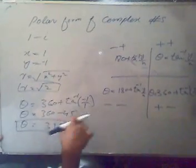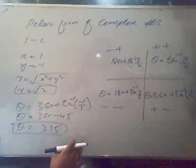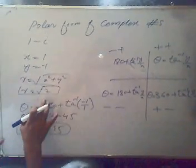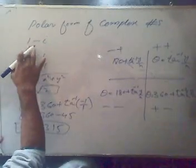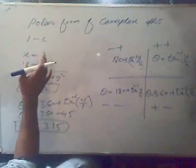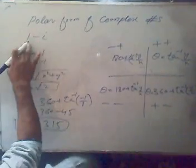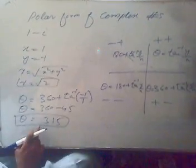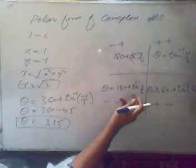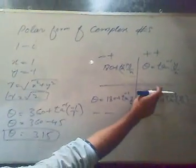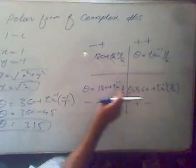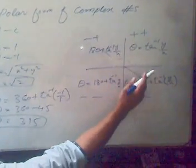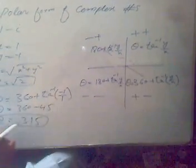So students, you just have seen that theta is changing or is the same whenever we change the signs of complex numbers. Or you can say that we are changing the coordinate of that complex number and we are getting different theta. Now if we see 315 is a bit less than 360, so it will be greater than 270. So it will lie something over here in fourth quadrant.